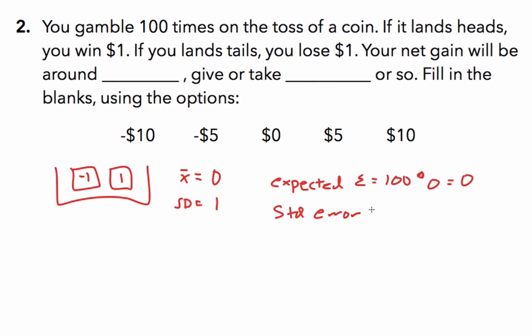The standard error will be the square root of 100 times the standard deviation of 1, or just the square root of 100, which is 10. So we would expect the wins or losses of any one set of 100 coin flips to be within $10 of 0, somewhere between a loss of $10 and a gain of $10.